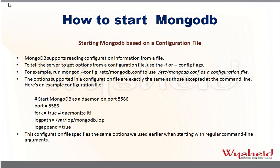Now we will see how to start MongoDB based on a configuration file. Here a configuration file is created with: 'port=5586, fork=true, logpath=/var/log/mongodb.log, logappend=true'. These are the same configuration parameters from the previous example, but now stored in a configuration file at '/etc/mongod.conf'. To start mongod using this file: 'mongod --config /etc/mongodb.conf' or equivalently 'mongod -f /etc/mongodb.conf'.